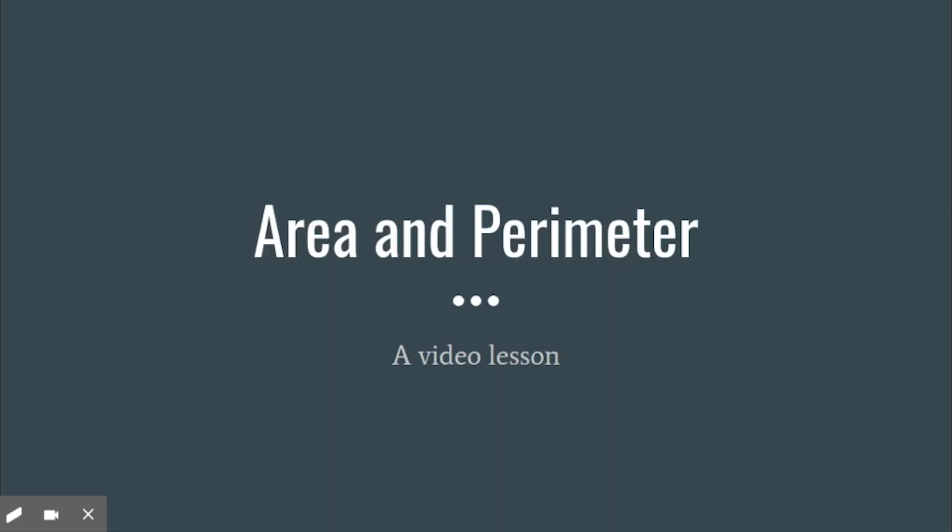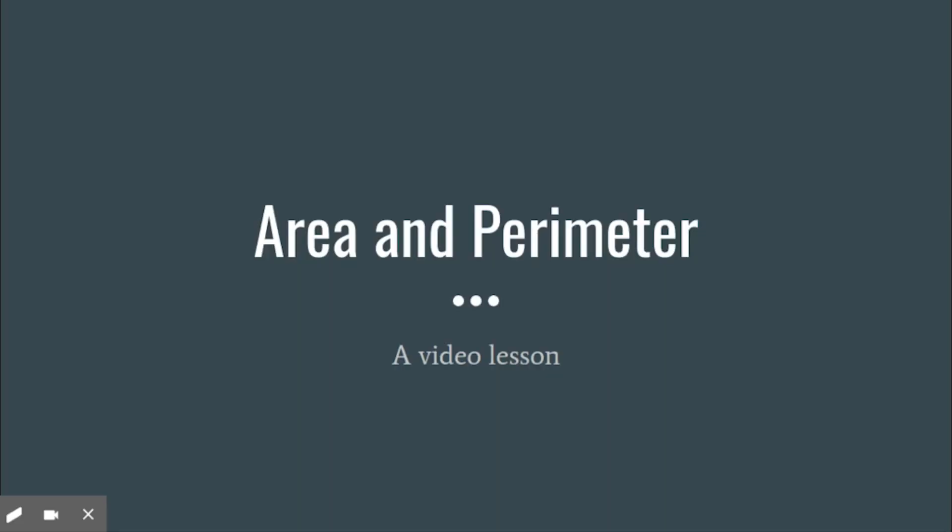Alright, so area and perimeter is something that we've been covering in 3rd and 4th grade and maybe even before that. So it's not going to be anything brand new, but we are going to be covering it again and taking it to the next level. Our goal is to answer questions pertaining to area and perimeter and how to figure out what the area and perimeter is. So let's go on into our program and look at the slide here.